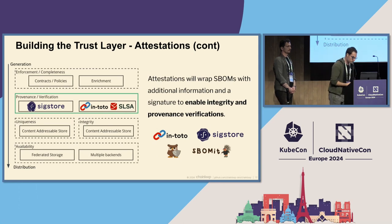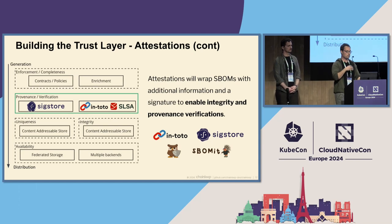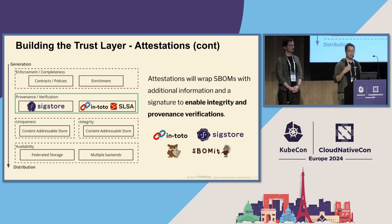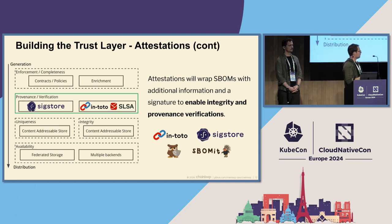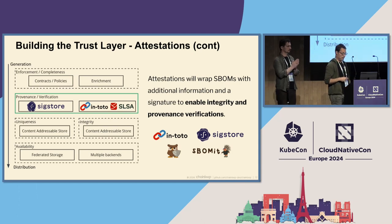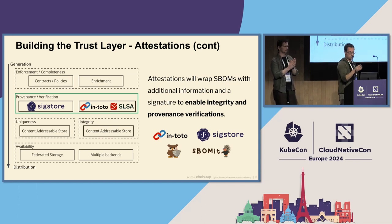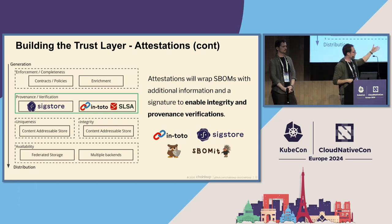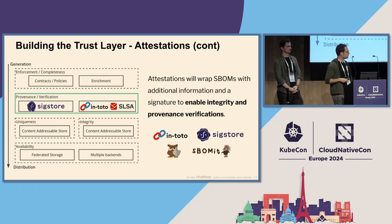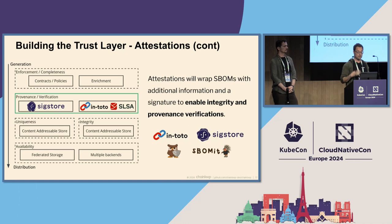How can we achieve integrity and provenance? The underlying component is what they call software attestation. An attestation is just a JSON file that contains arbitrary information about your software — what you're building. For example, if you're building a container image, you might store how you built it, what's inside it, and what build system configuration you have. That gives you the provenance information. The second component of an attestation is that it is authenticated — it is signed — which means you can verify integrity out of it.